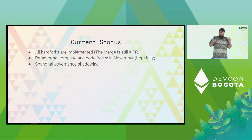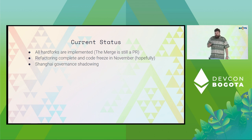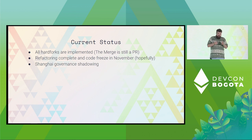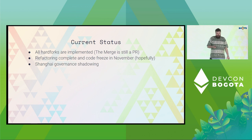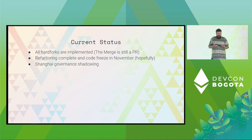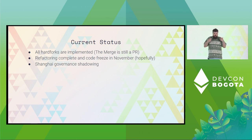I should talk about where we're at. We have implemented all the hard forks. The merge is still a PR, but we're nearly there. We need to do a bunch of refactoring and then freeze the code, because we're asking people to build on top of it — take our latest fork, copy it, implement their own changes. We can't ask people to do that until we've frozen the code. Once we've done that, we're planning to shadow the current governance process for Shanghai — it'll go through in exactly the way previous hard forks have, but we'll also work with people to implement those changes as EELS proposals and see how the governance process works.